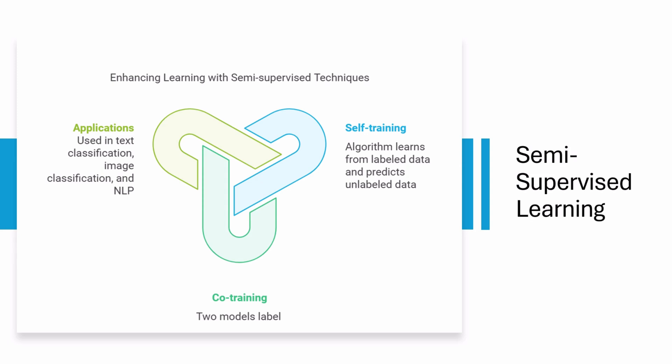Techniques such as self-training and co-training are often employed. In self-training, the algorithm first learns from the labeled data and then makes predictions on the unlabeled data, treating its predictions as pseudo-labels. Co-training involves training two different models on the same data, where each model helps label the data for the other — effectively creating a feedback loop. Semi-supervised learning has found applications in text classification, image classification, and natural language processing.